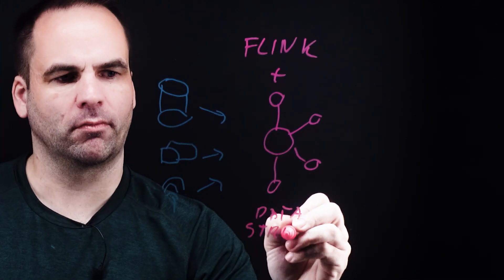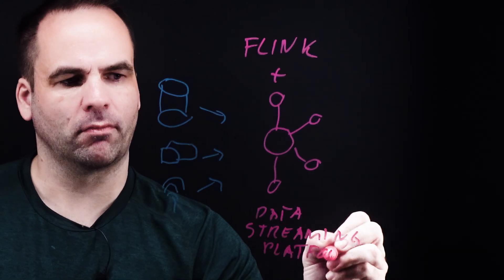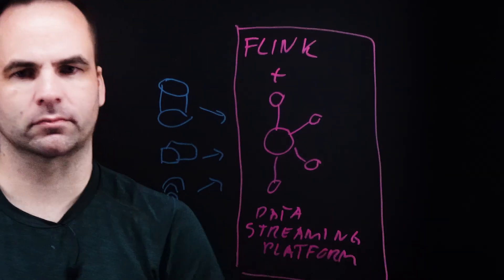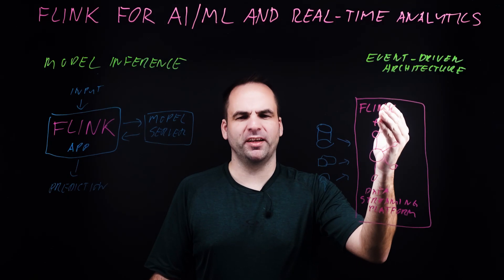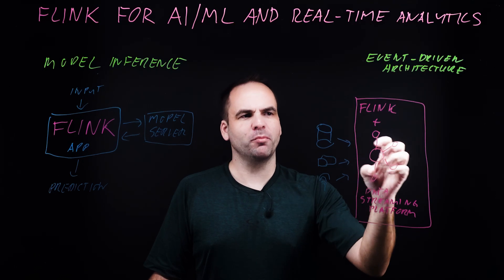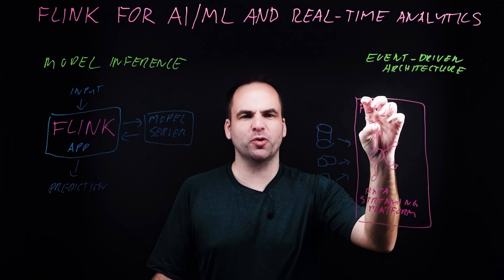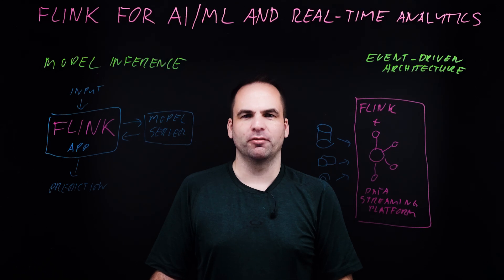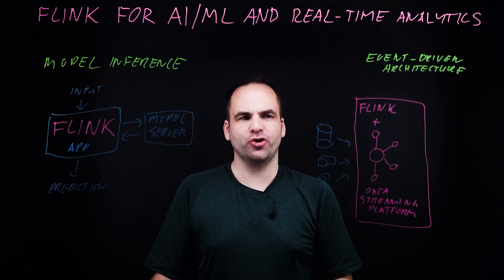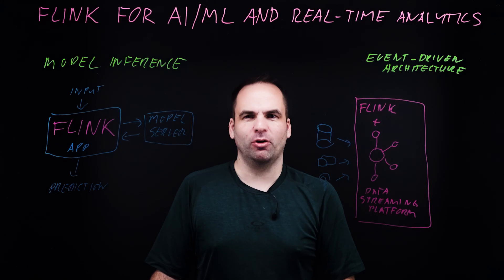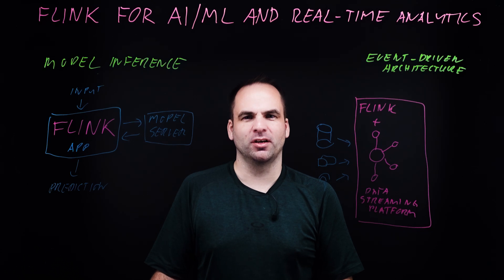Flink together with Apache Kafka is the foundation of the data streaming platform. The processing part with Flink can be used not just for model inference for AI use cases, but also for preprocessing, aggregations, and all use cases where you need to process data. You can choose between Flink SQL or the Table API and leverage programming languages including Java and Python — so some interface for almost everyone.